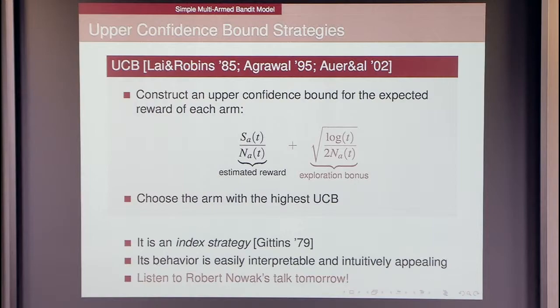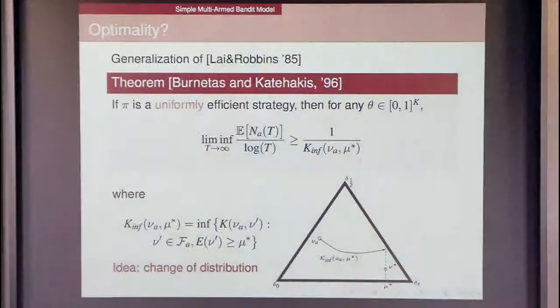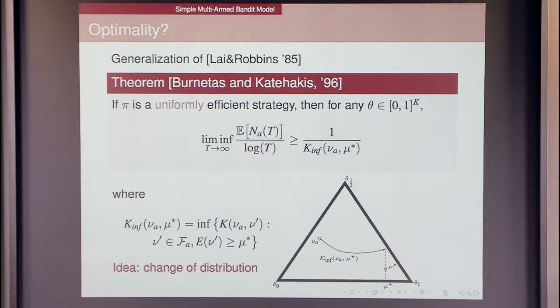If n_A(t) is 0, that means you have not tried that arm before, then it's infinity. Yeah, that's right. So at the beginning, you try each option just to initialize this. You can say the index is plus infinity in that case, and so it will be prioritized against all the other arms. This strategy works well. You can try it.